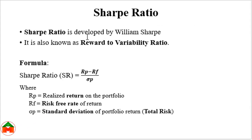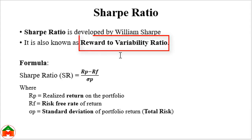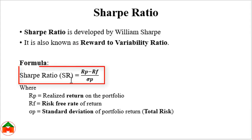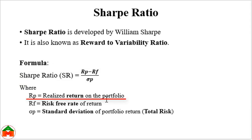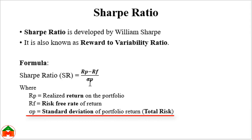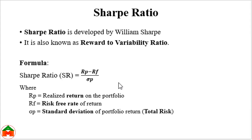The Sharpe ratio was developed by William Sharpe and is also known as the reward-to-variability ratio. The formula is: (Rp minus Rf) divided by sigma p. Here Rp means the realized return on the portfolio — that is, the actual return from the portfolio. Rf means the risk-free rate, and sigma p means the standard deviation of the portfolio. Standard deviation represents total risk, and in the Sharpe ratio we use total risk to get the ratio.